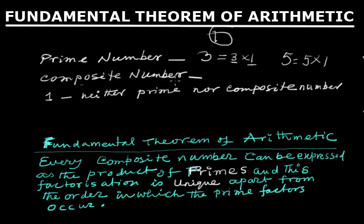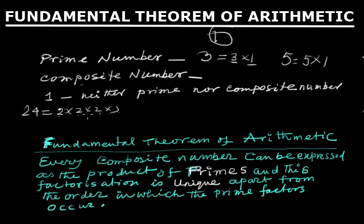Now, which numbers are composite numbers? These are numbers that can be expressed as a product of primes. For example, 24 can be expressed as 2 × 2 × 2 × 3. We can verify: 2 × 2 = 4, 4 × 2 = 8, 8 × 3 = 24. It can also be written as 4 × 6 or 8 × 3, but 4, 6, and 8 are not prime numbers.